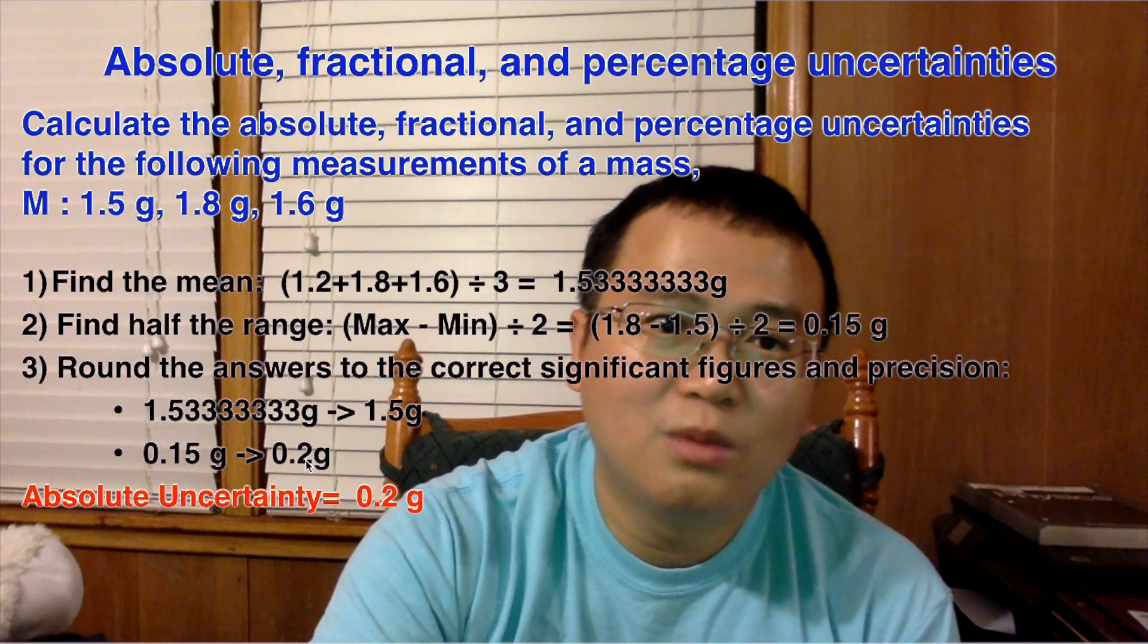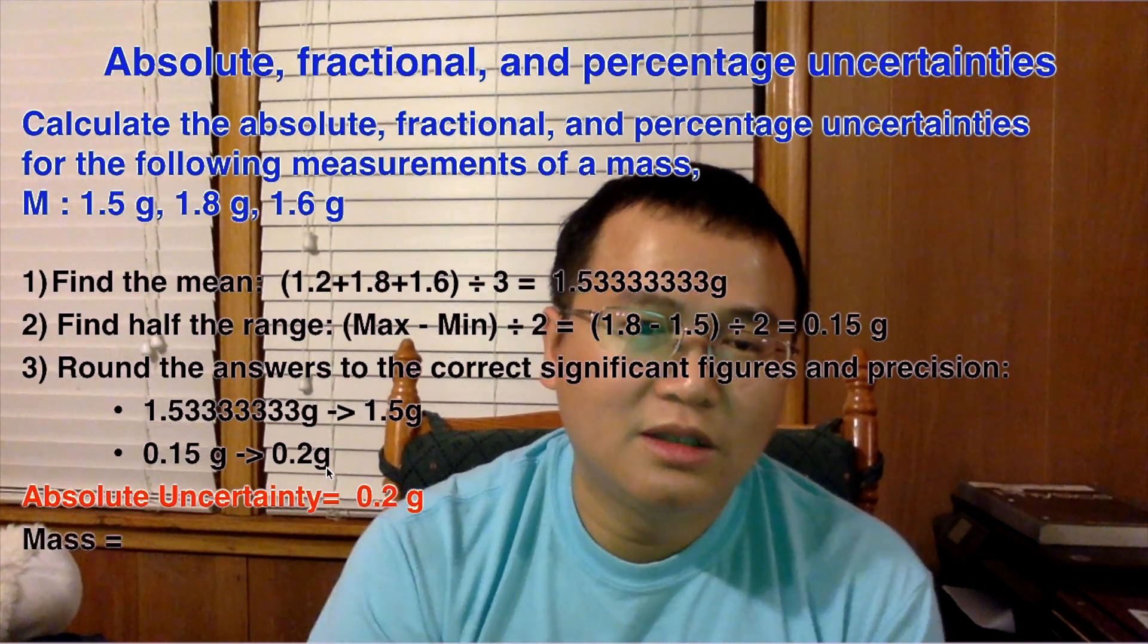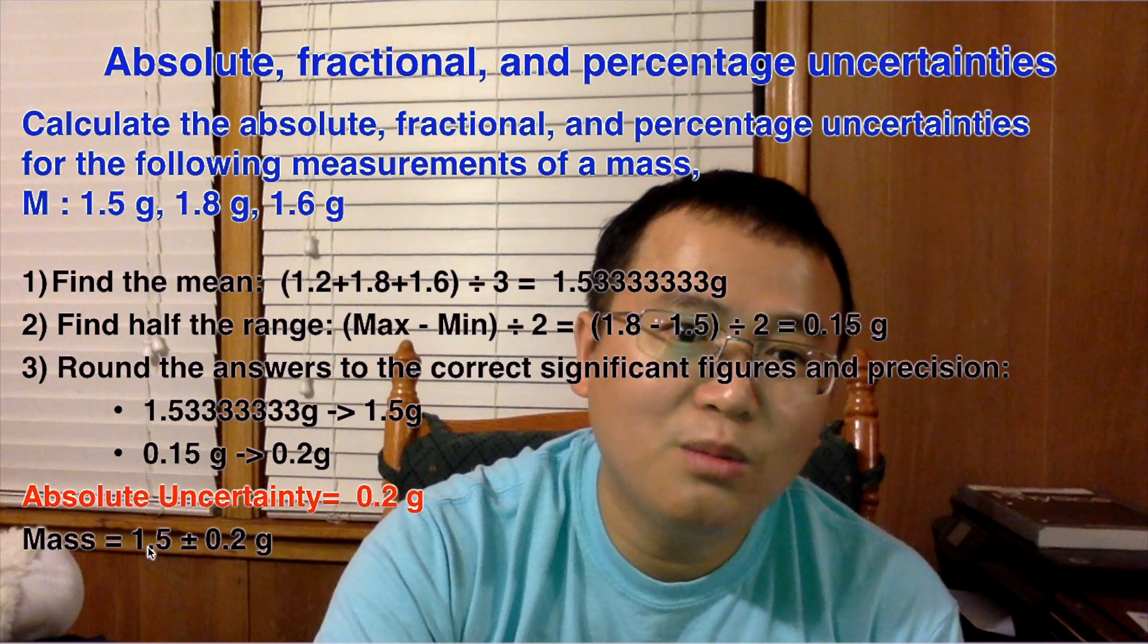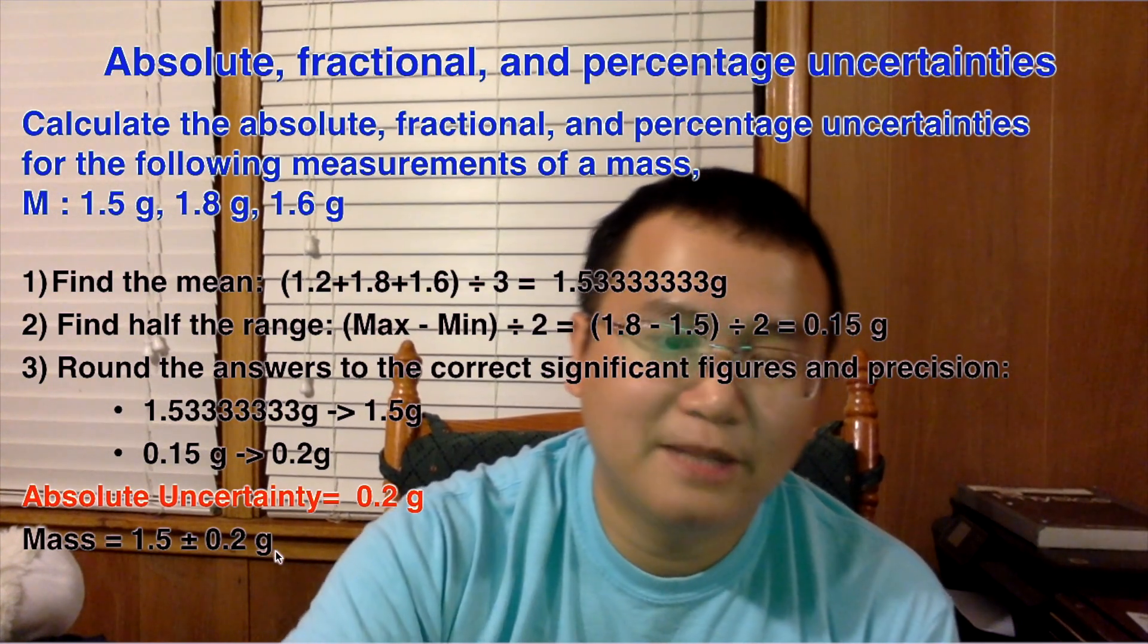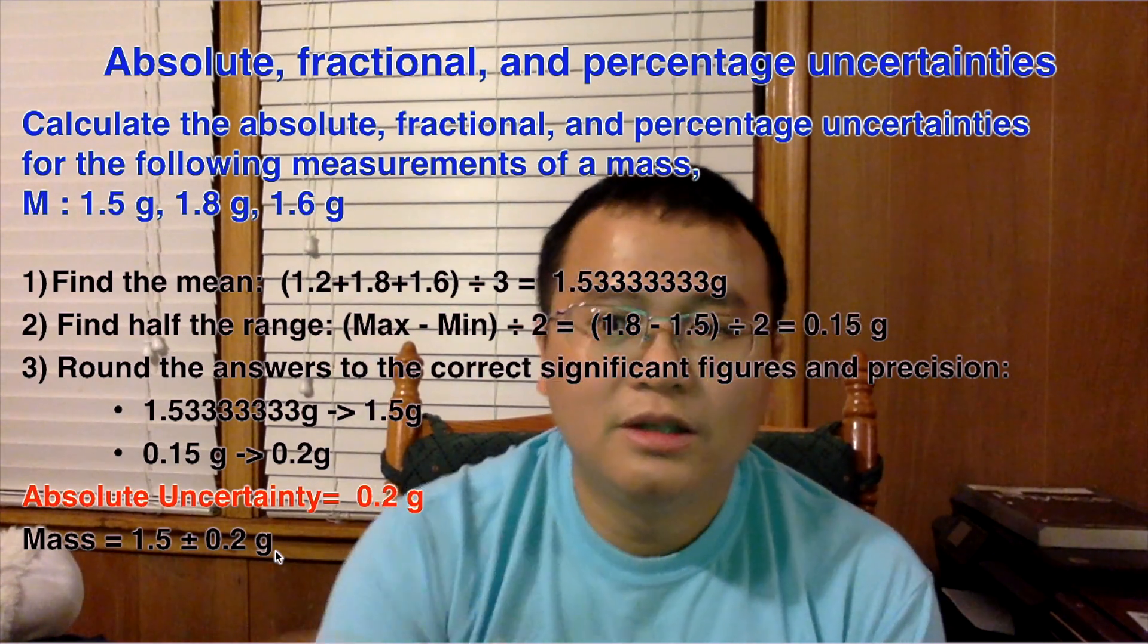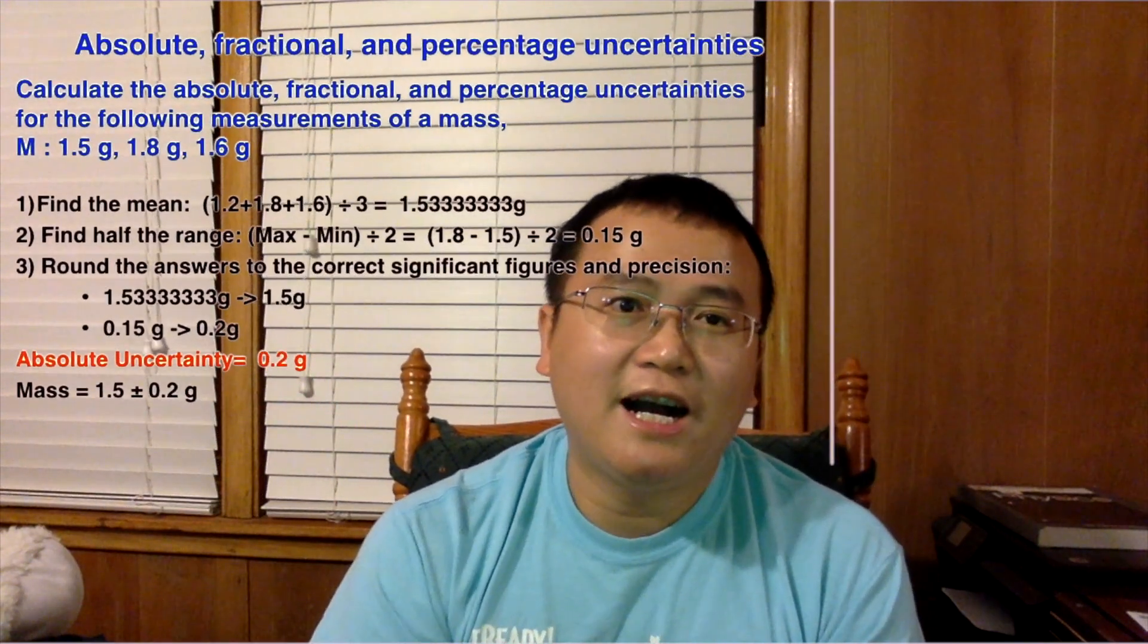Okay, so the absolute uncertainty is this value right here, 0.2 grams, but the way we write the mass is we say it's 1.5 plus or minus 0.2 grams. That's how we write it. So what is the next thing that we need to do? We need to find fractional uncertainty.